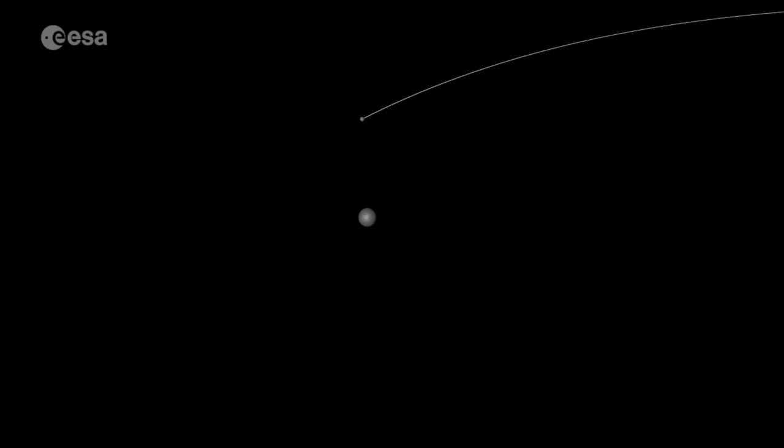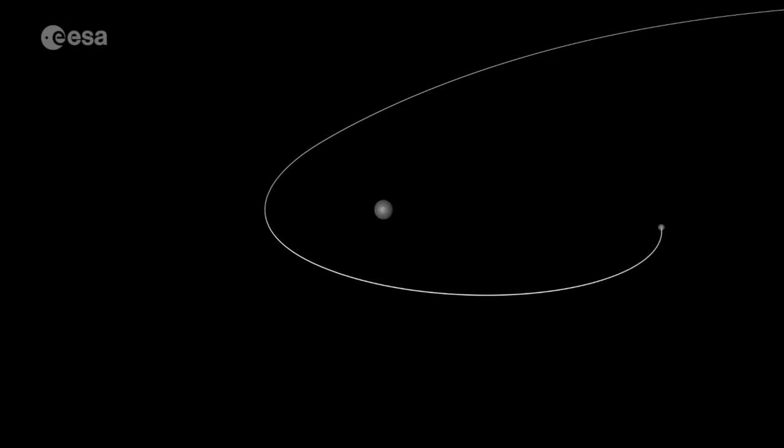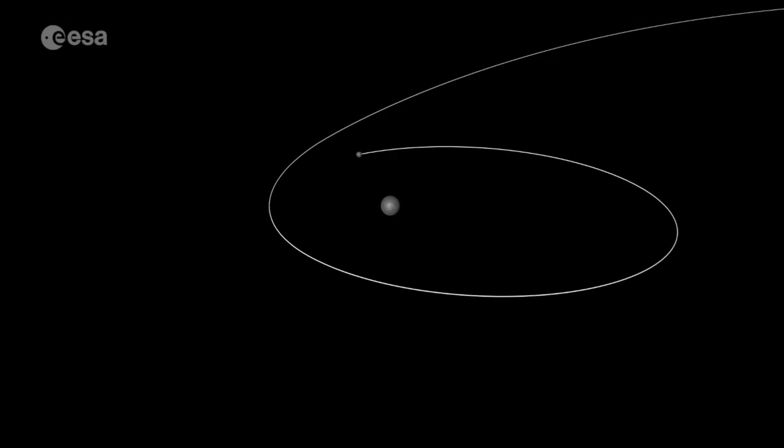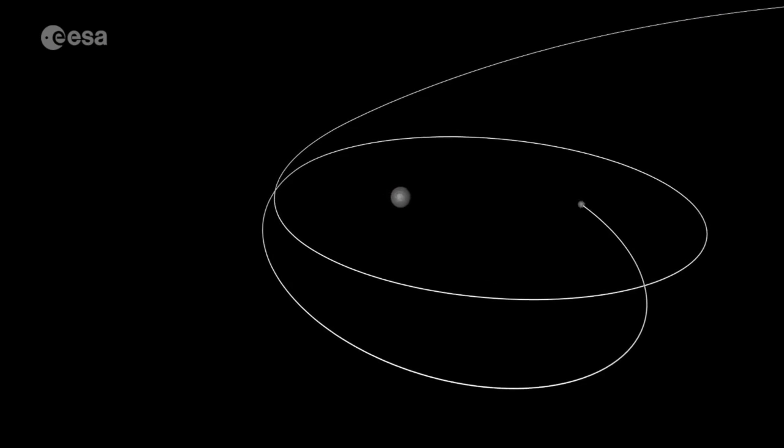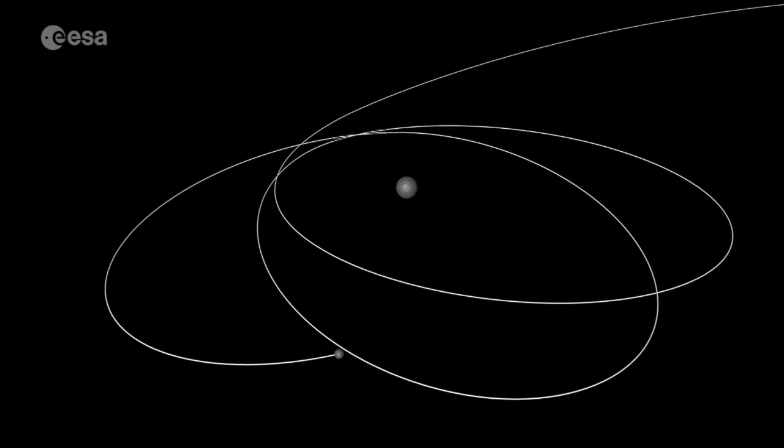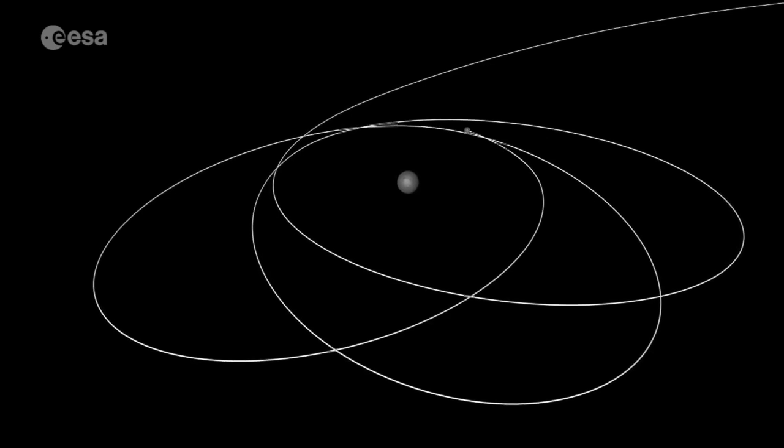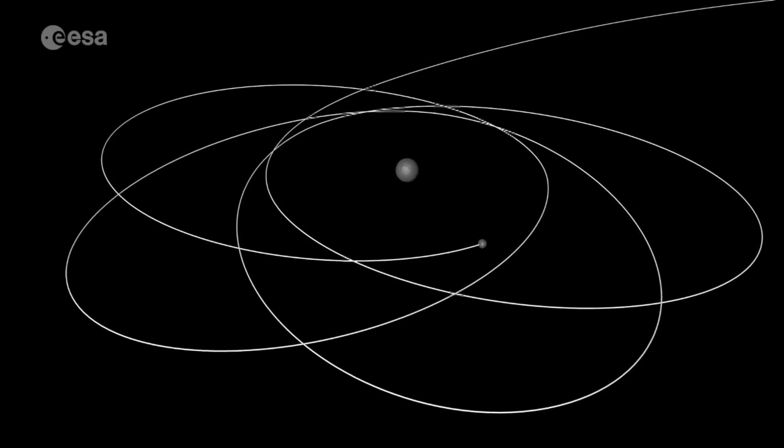The first theory is that the Earth captured another body — the moon — and forced it into an orbit around Earth. The problem here is we have samples from the moon, and we know that the material of the moon is very close to the material of the Earth's mantle. So it's unlikely that a body formed elsewhere in the solar system had the same composition as the Earth's mantle.